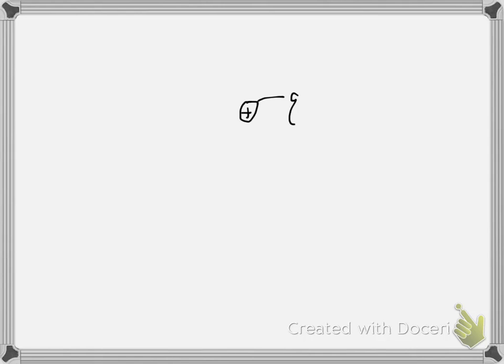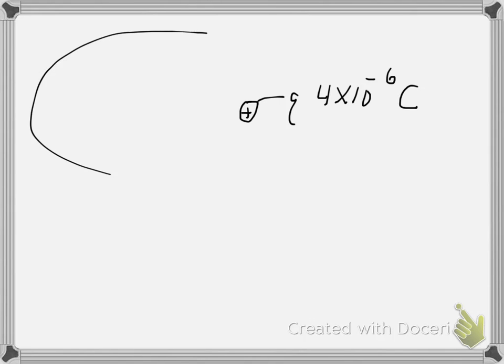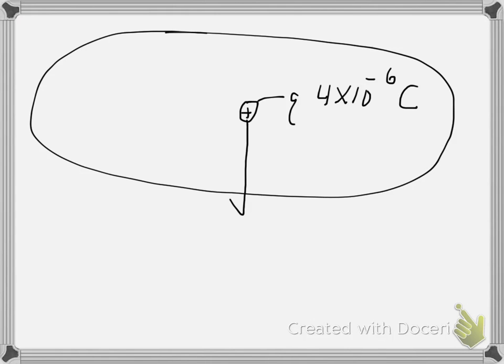Let's do a quick example using the electric field. Imagine a positive test charge with charge Q of 4 times 10 to the negative 6 Coulombs. I'm placing it in a region of space — I'm not going to worry about where this electric field is coming from; it could be from another source charge, a collection of charges, or a charged plate. All I know is that when I place this test charge in this region, it feels a force downward of 12 Newtons. What is the value of the electric field in this region?